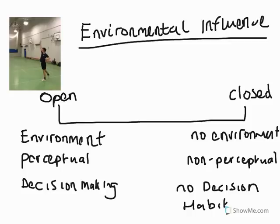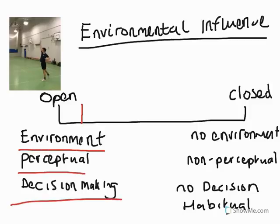The closed skill is entirely opposite to that: no environmental influence. It is a pure motor skill, or non-perceptual. There is no decision making — it's more automatic, habitual. We follow the same technique every single time. The badminton clear shot occurs somewhere in the open range, because Will is playing that shot from that position because his opponent played the shuttlecock there, and he has to judge position, flight, angle, and speed. A closed skill would be something like a discus throw — it is the same every single time.